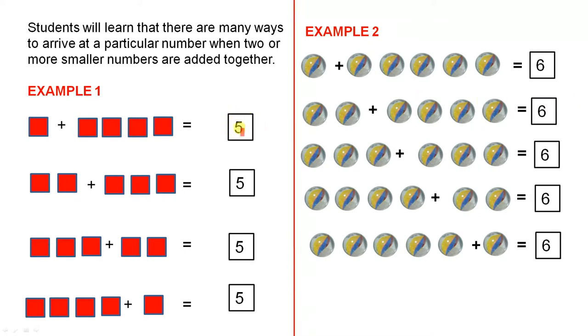So say we wanted to arrive at the number 5. 1 plus 4 equals 5, 2 plus 3 equals 5, 3 plus 2 equals 5, and 4 plus 1 equals 5.